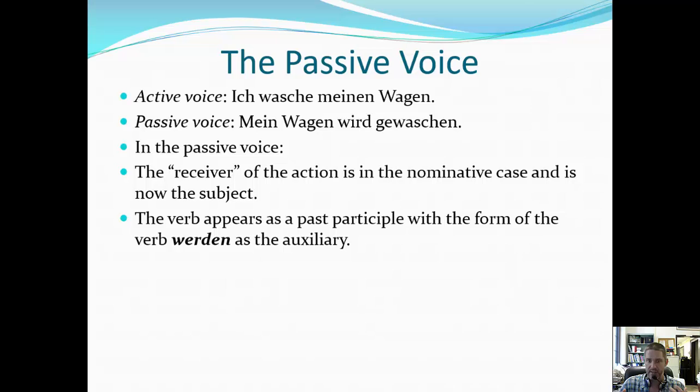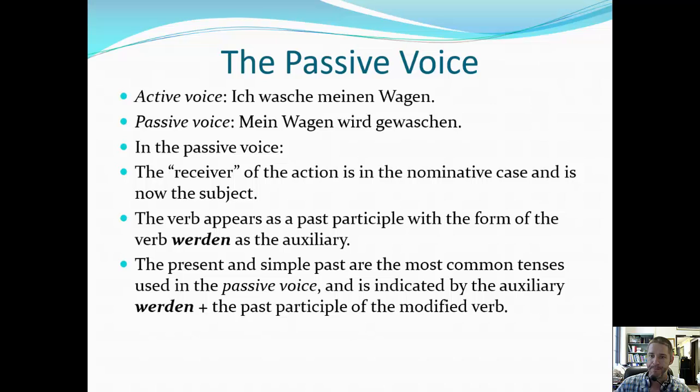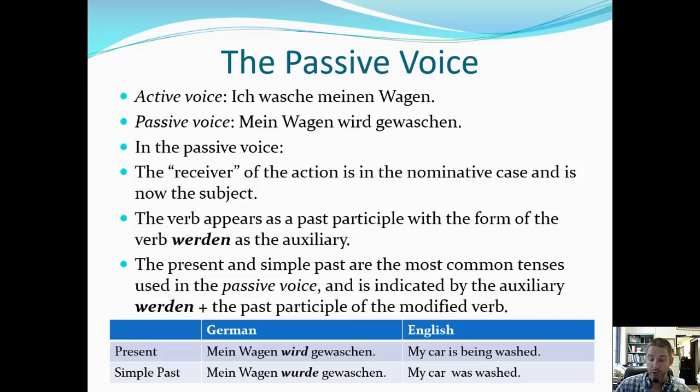This is similar to word order in the present perfect — for example, 'ich habe meinen Wagen gewaschen' — or with a modal verb: 'ich muss meinen Wagen waschen.' In those examples, 'Wagen' was the direct object, but in the passive voice it changes — it's no longer the direct object. The word order, however, is the same: when you have two verbs, 'werden' is verb one plus the past participle.